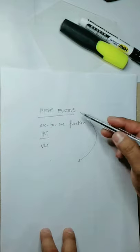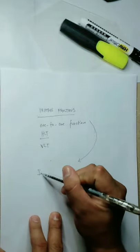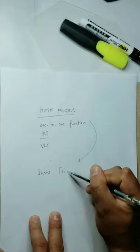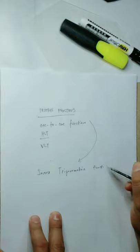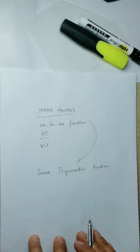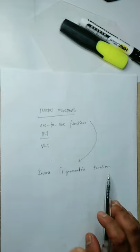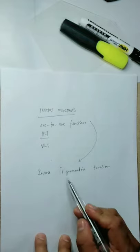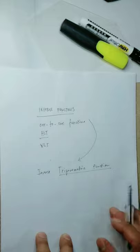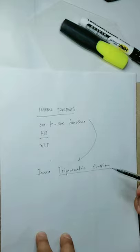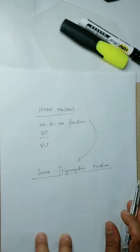We are going to connect the concept of inverse function in graphing the inverse trigonometric function. So in order to sketch the graph of the inverse trigonometric function, we first restrict the domain of the trigonometric function, because each of them is not a one-to-one function. So gagawin po muna natin one-to-one function yung trigonometric function para magkakaroon ng inverse trigonometric function.